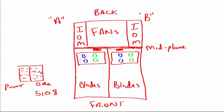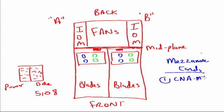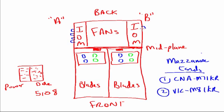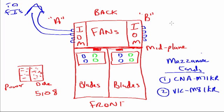If we're using a VIC-M81KR, the mezzanine cards include the CNA M71KR as well as the VIC-M81KR. With the VIC-M81KR parallel card, we can create up to 58 virtual adapters on these blades, depending on how many IOM ports we have connected. We're going to have four IOM connectors that go up to our fabric interconnects — to the FIs. Whatever we do on the left-hand side, we would do on the right-hand side as well.